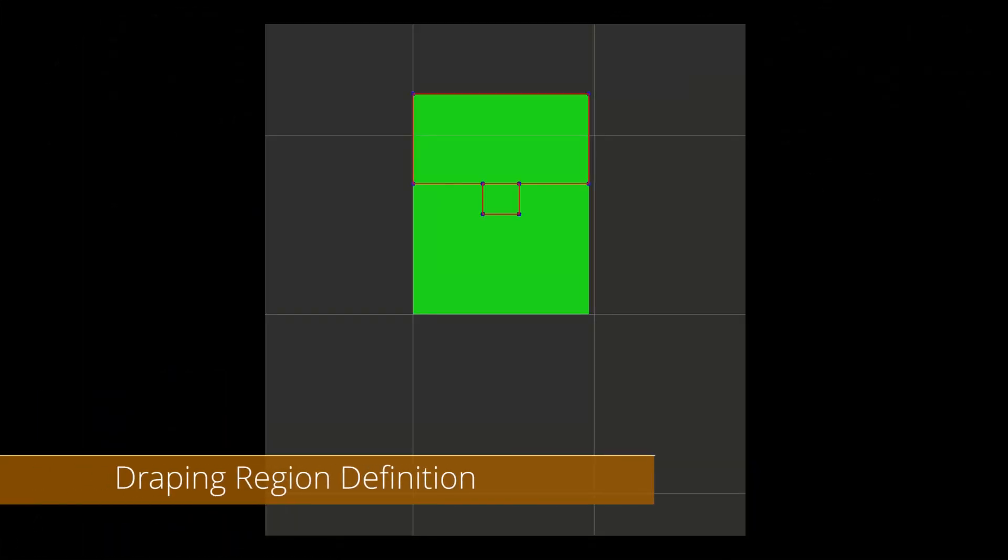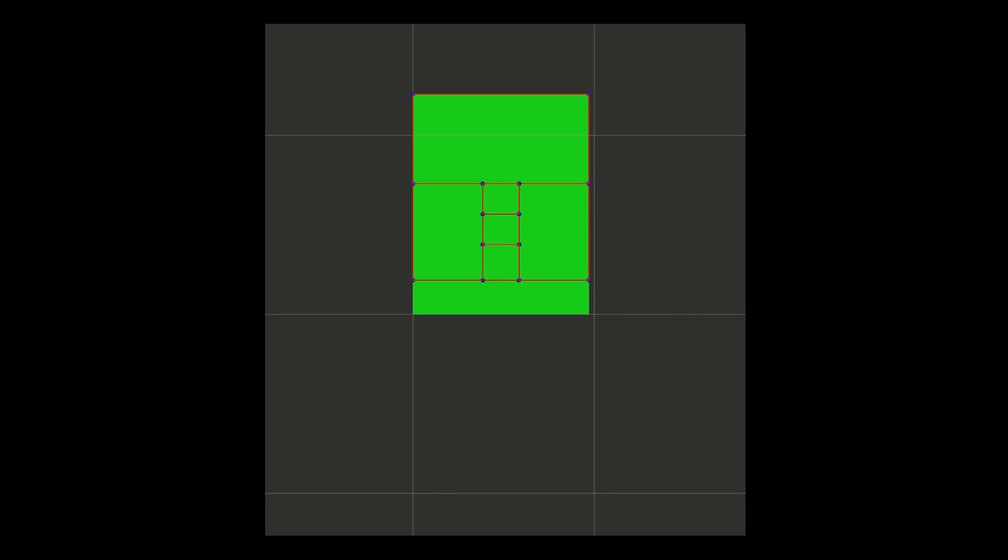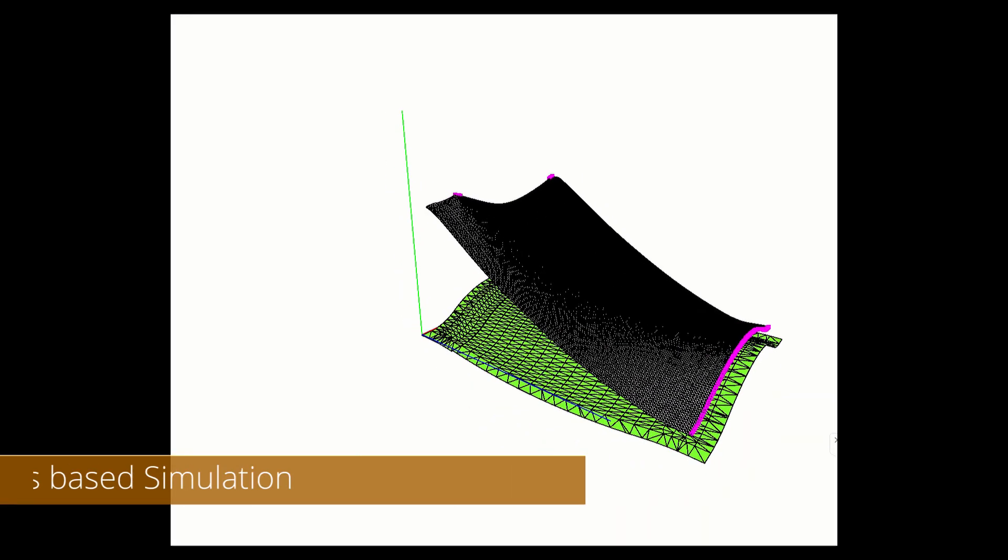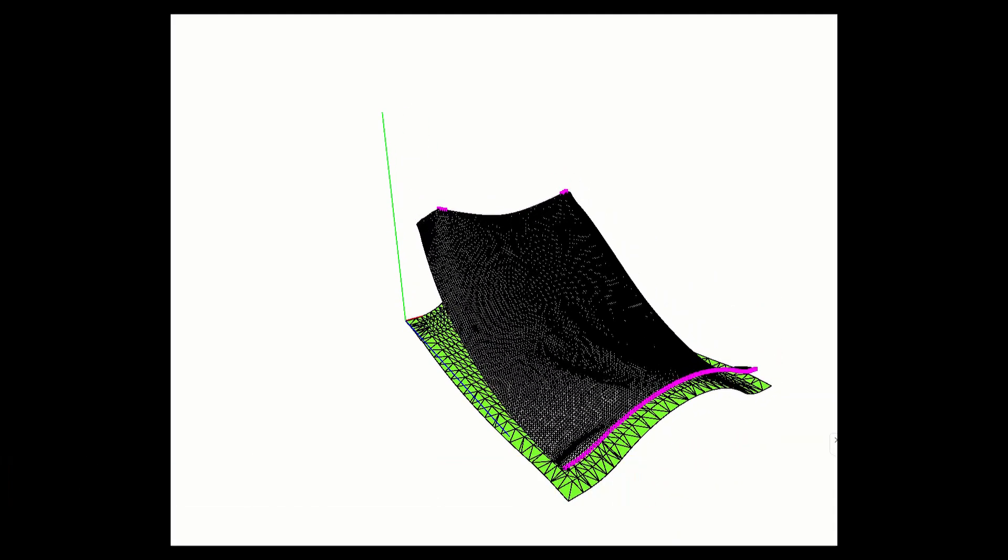Draping is always done in stages. These stages are represented by local regions, which are sequentially conformed to the mold. We use the digital twin of the composite sheet to search for appropriate grasping locations to support the draping operation.